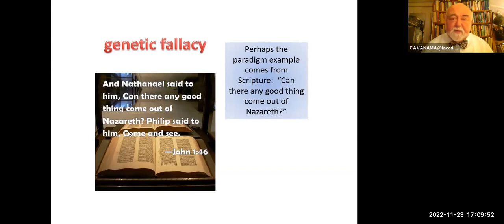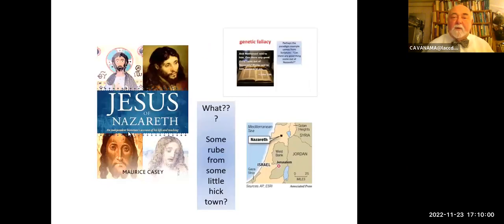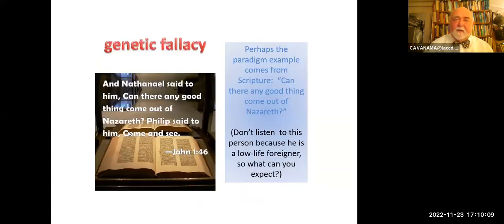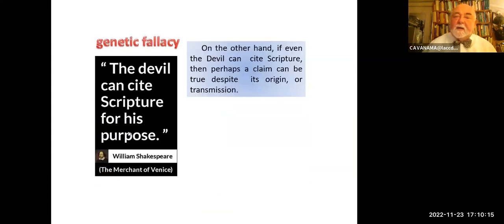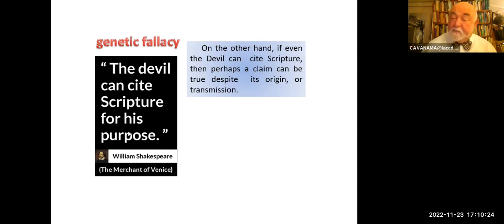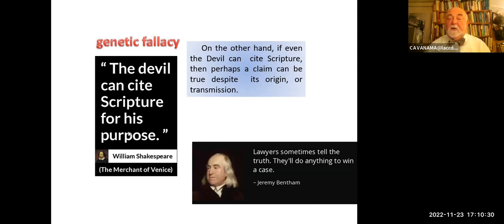Perhaps the paradigm example of the genetic fallacy comes from scripture: 'Can there any good thing come out of Nazareth?' Some rube from some little hick town — why should we pay any attention to this guy? Don't listen to this person; he's a low-life foreigner. On the other hand, Shakespeare tells us: 'The devil can cite scripture for his purpose.' If even the devil can cite scripture, then perhaps a claim can be true despite its origin, its transmission. As Jeremy Bentham reminds us, lawyers sometimes tell the truth — they'll do anything to win a case.